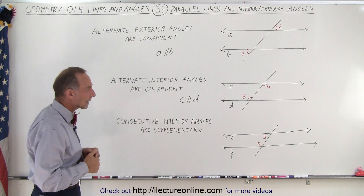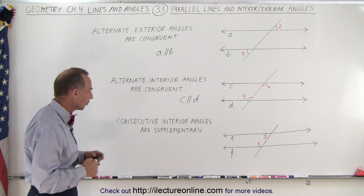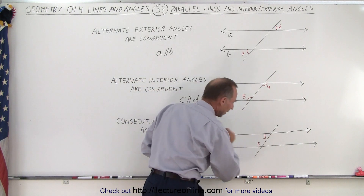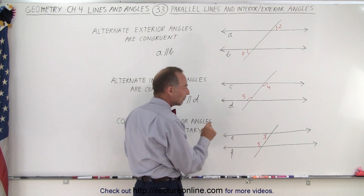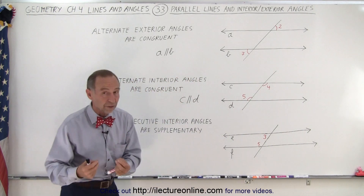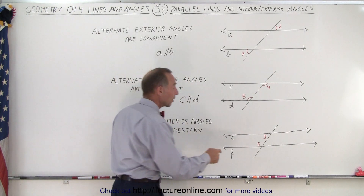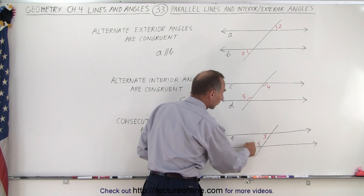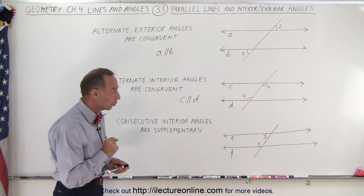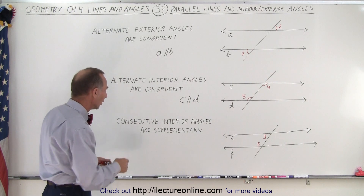Now let's take a look at the interior angles. Here we have consecutive interior angles 3 and 5. If those two angles are supplementary — meaning if the measure of angle 3 added to the measure of angle 5 add up to 180 — then we can also conclude that those two lines are parallel.